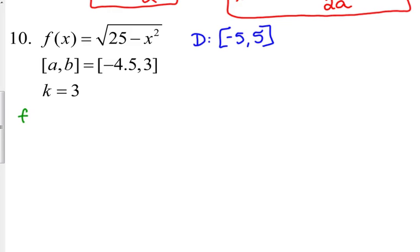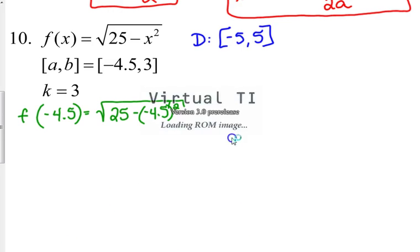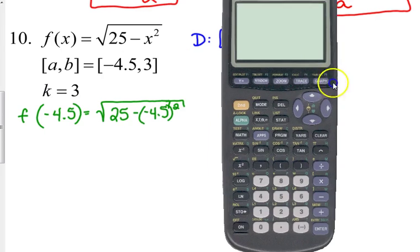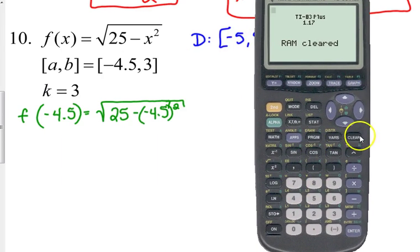Alright, so let's do this. F of negative 4.5. So we plug that in. This one does require a calculator, so I'll help you guys out. You could square 4.5 by hand, it's really not that bad. But now, here's a note.